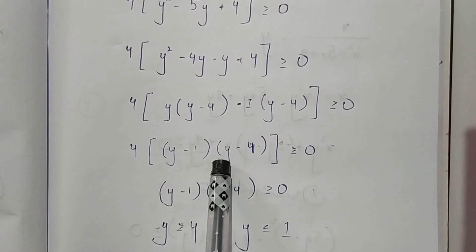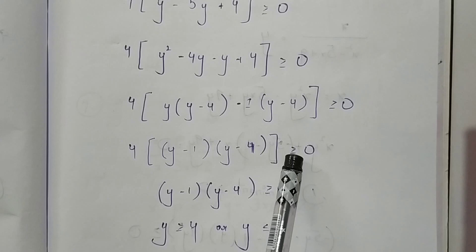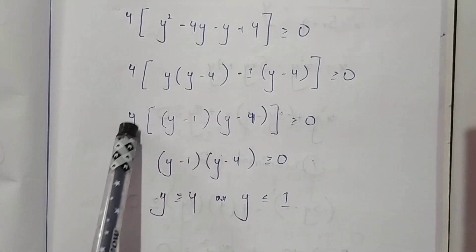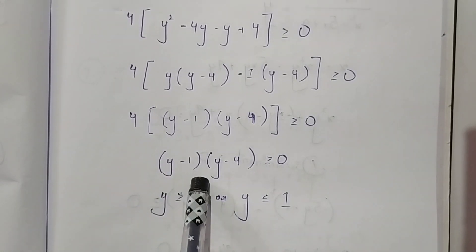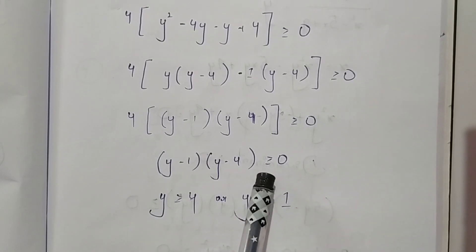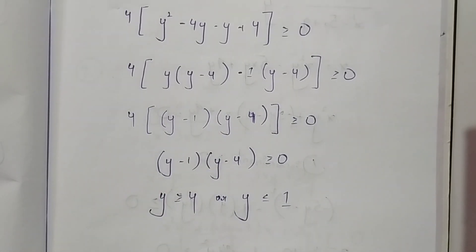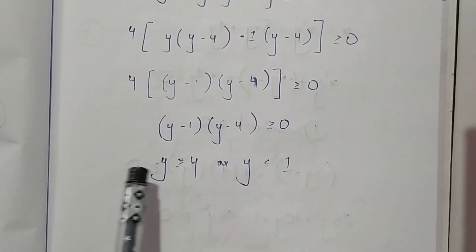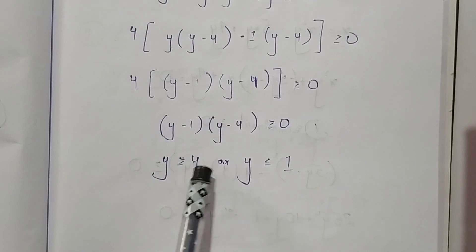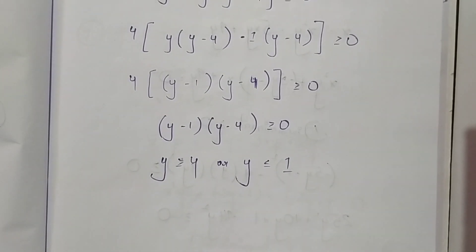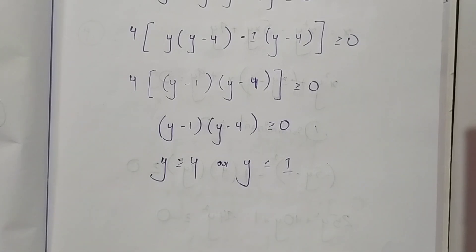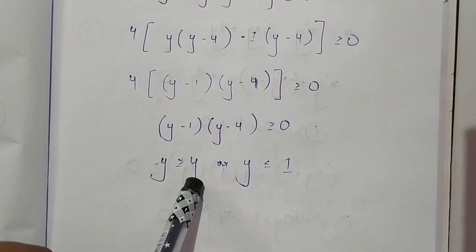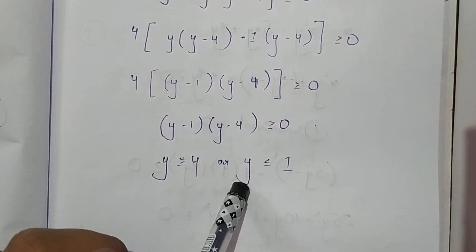We need to solve this quadratic expression. On factoring we get 4(y - 1)(y - 4) ≥ 0, so (y - 1)(y - 4) ≥ 0. This will be greater than or equal to 0 if y ≥ 4 or y ≤ 1. As the question says we need to prove the expression will not lie in the range of 1 and 4, we have proved that the given expression will not lie in the range 1 to 4 — the range is y ≥ 4 or y ≤ 1. Thank you.